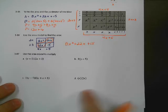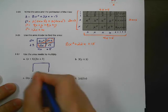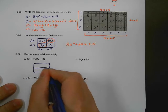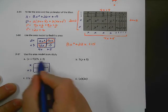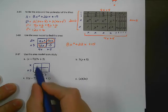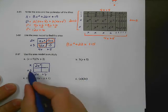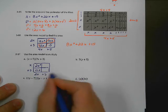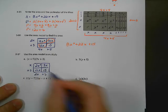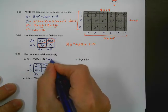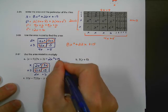Now we're going to use the area model to multiply. We're going to multiply X plus 5 times 2X plus 3. I set up a little area model — on one side I put X plus 5, on the other side 2X plus 3. This square is 2X times X, which is 2X squared. This square is 5 times 2X, which is 10X. This square is X times 3, which is 3X. And the last area is 3 times 5, which is 15. Combining like terms: 3X and 10X make 13X. So the final answer is 2X squared plus 13X plus 15.